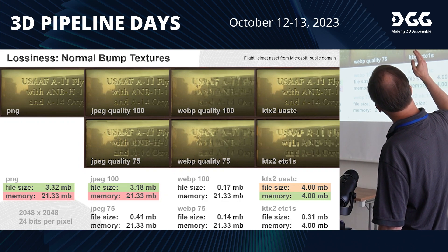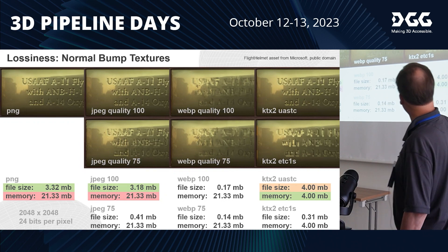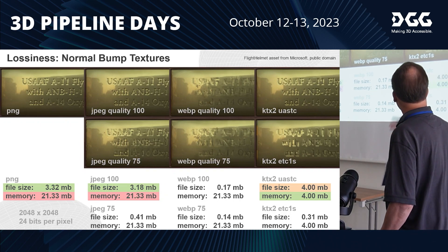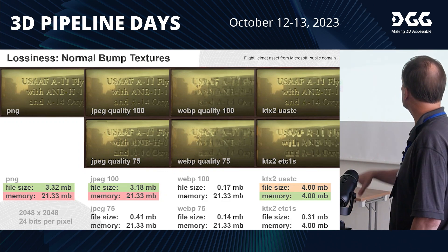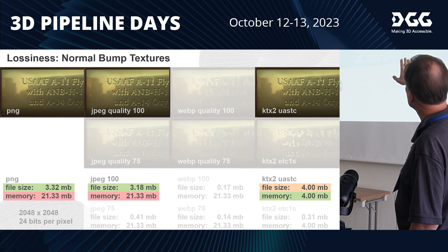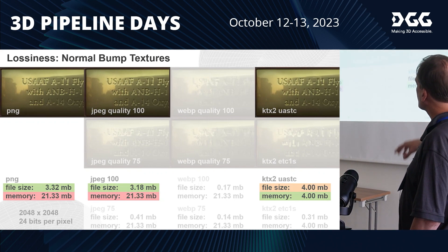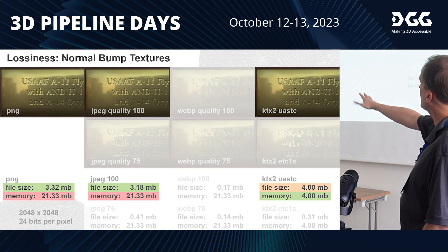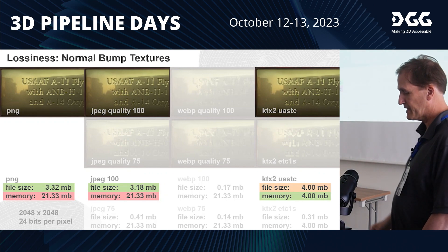For KTX2 on normal maps, there are two compression codecs. UASTC is higher quality but makes a slightly larger file. ETC1S makes a really small file — less than 10% of the other. But both stay much smaller in memory than the rest. For normal maps, you generally can't use WebP, low-quality JPEG, or ETC1S — it's just too noisy and you lose high-frequency detail. The right format really depends on your delivery target: for single assets, memory is less of a concern, but for loading and unloading many assets, KTX2 is the answer.